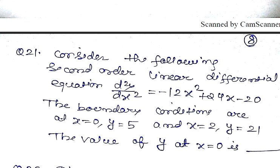Question number 21. Consider the following second order linear differential equation. D2y by dx square equal to minus 12 x square plus 24 x minus 20. The boundary conditions are: at x equal to 0, y is 5, and at x equal to 2, y is equal to 21. The value of y at x equal to 1 is.